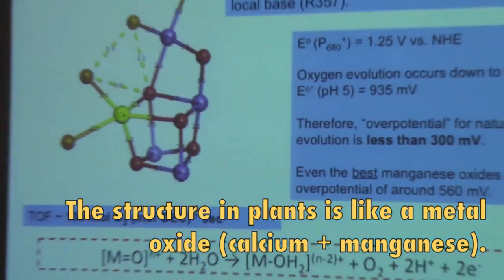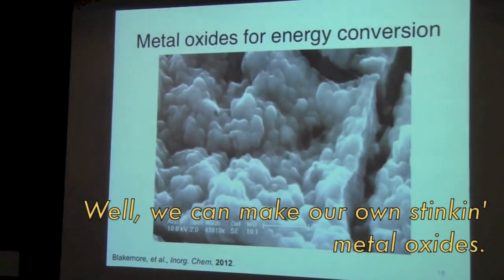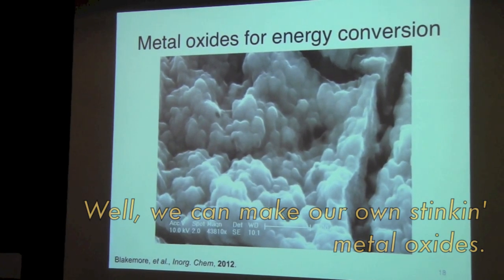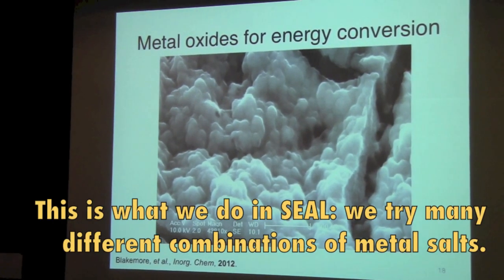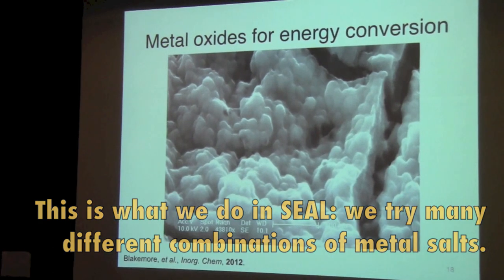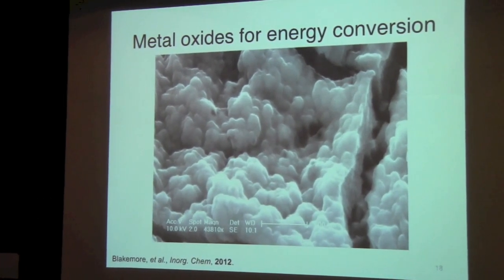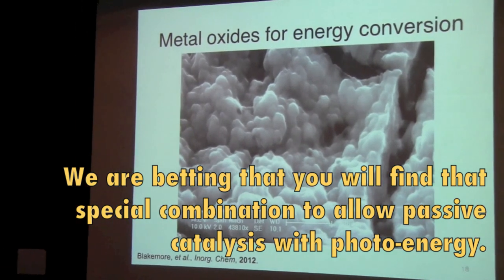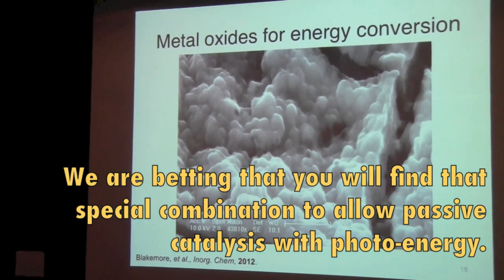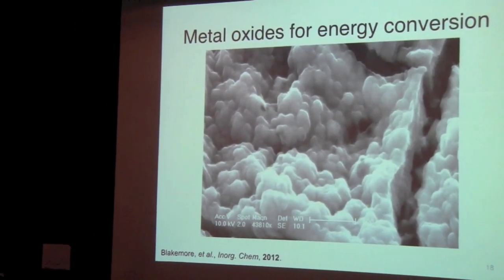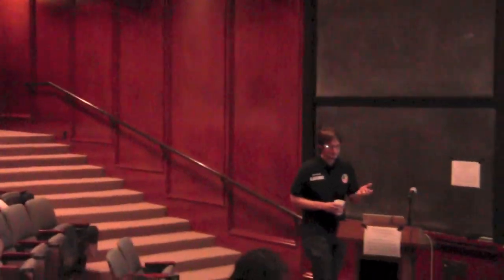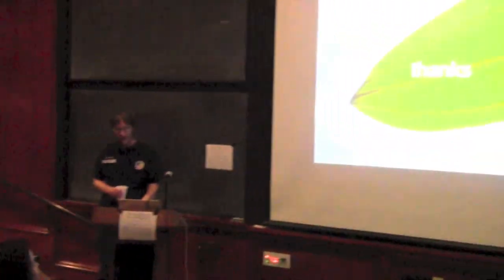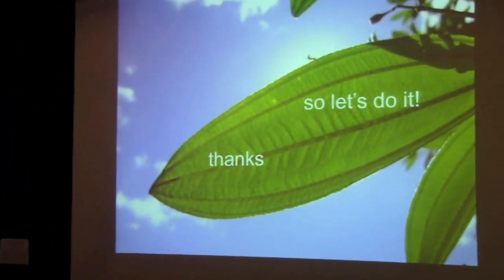We have this idea from plants with metal oxides. We can make our own metal oxides, which is what you do in this program. You take metal salts and you bake them and you make metal oxides which have unique combinations. And what we're betting on is that you'll find a very special combination, just like plants did with manganese and calcium, to split water. With that, I'll just say it's time to go.